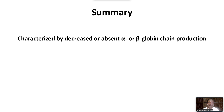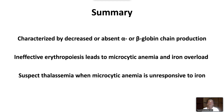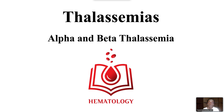In summary, thalassemias are characterized by decreased or absent alpha or beta globin chain production. Ineffective erythropoiesis leads to microcytic chronic hemolytic anemia and iron overload. Suspect thalassemia when microcytic anemia is unresponsive to iron supplementation. This ends our video on thalassemias, alpha and beta thalassemia.